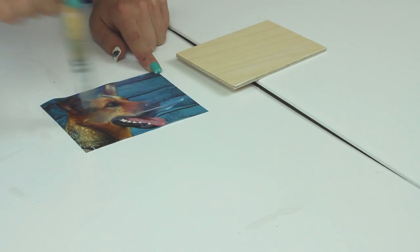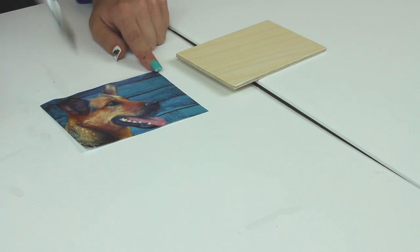Once dry, apply another coat of Photo Transfer Medium to the front of the photo and to the project surface.